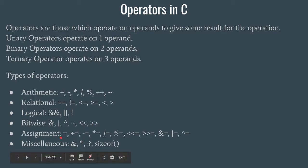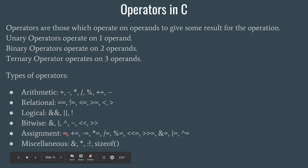Then we have assignment operators. The name is self-explanatory — assignment operators are used to assign some value to a variable. It can be direct equals (=), or compound forms like plus-equals (+=), minus-equals (-=), multiply-equals (*=), divide-equals (/=), and so on. These are the various assignment operators.